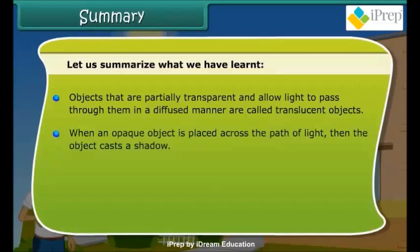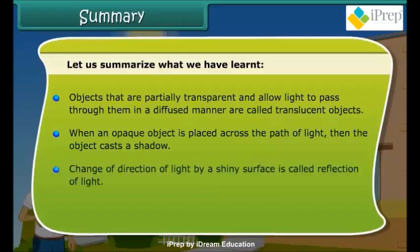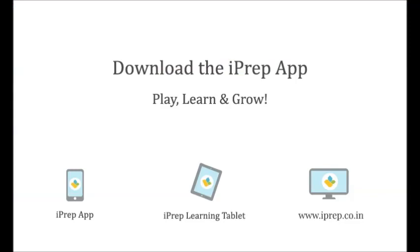When an opaque object is placed across the path of light, the object casts a shadow. The change of direction of light by a shiny surface is called reflection of light.